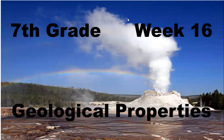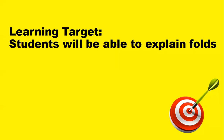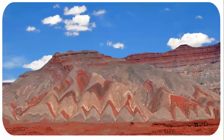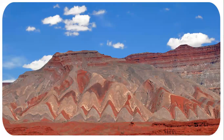Hey 7th grade, Mr. Nichols here and we're in week 16. We're talking about geological properties. We should be able to explain something known as folds. So when you look at this picture, what do you see? Moving around the desert southwest we see lots and lots of folds. This view is near the Valley of the Gods in Utah. Can you see all the types of folds mentioned? All the folds mentioned in this text are found in the arid southwest U.S.